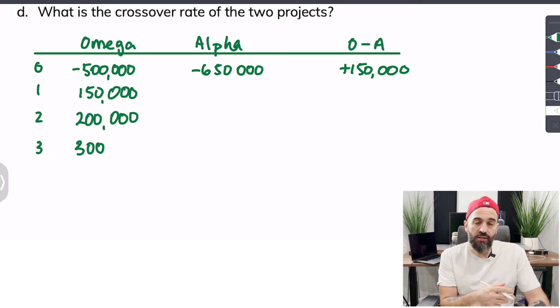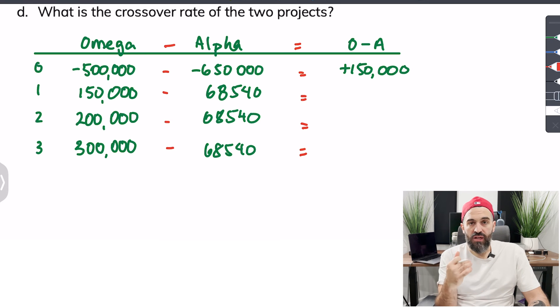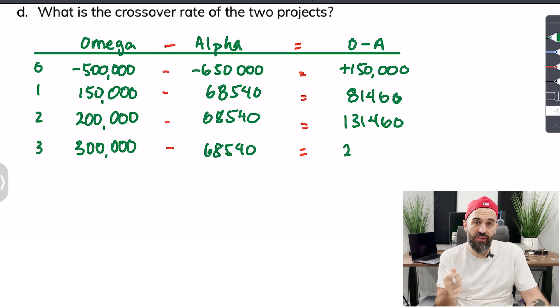Then we'll enter the cash flows for Omega, we'll enter the cash flows for Alpha and we'll do that all the way till year six and beyond. Technically this can go on to infinity but we don't need to do that.